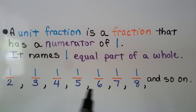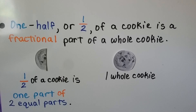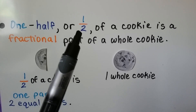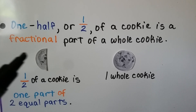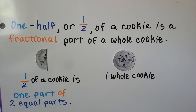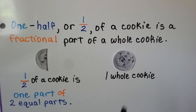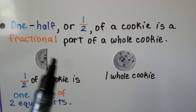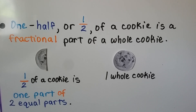The bottom number tells us how many parts there are in all. The top number tells us how many we are counting. So this is one out of two. One-half of a cookie is a fractional part of a whole cookie. One-half of a cookie is one part of two equal parts. The cookie was cut in half. We have one of the two parts — that would be a whole cookie split into two parts, and we have only one of the parts: half, one of the two equal parts.